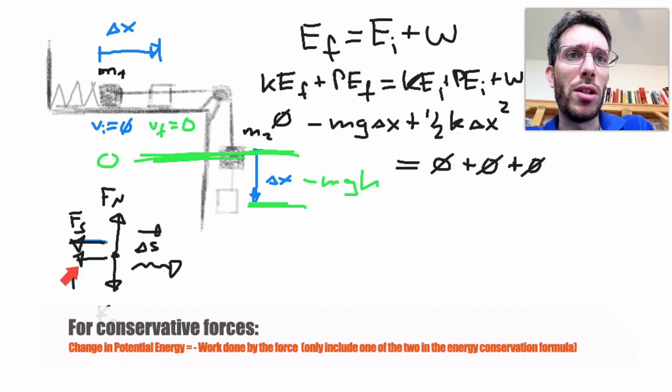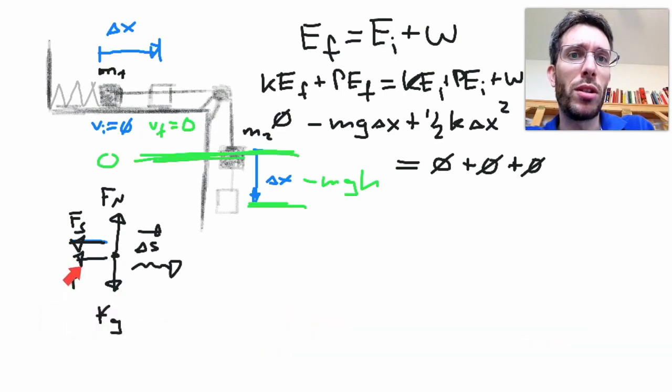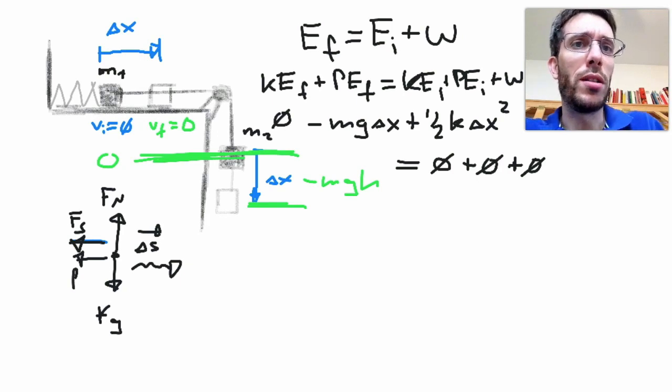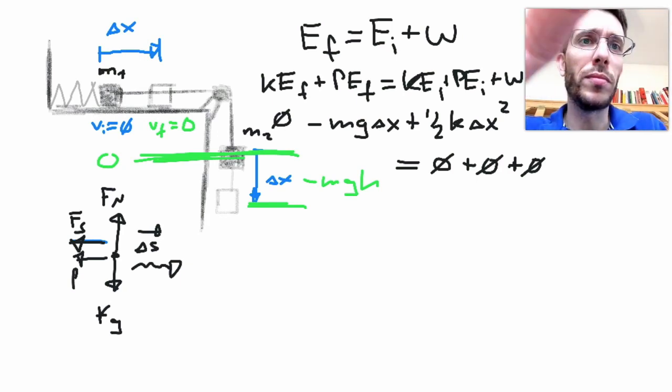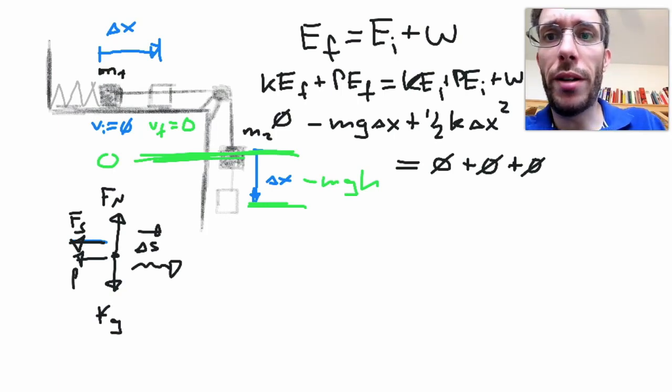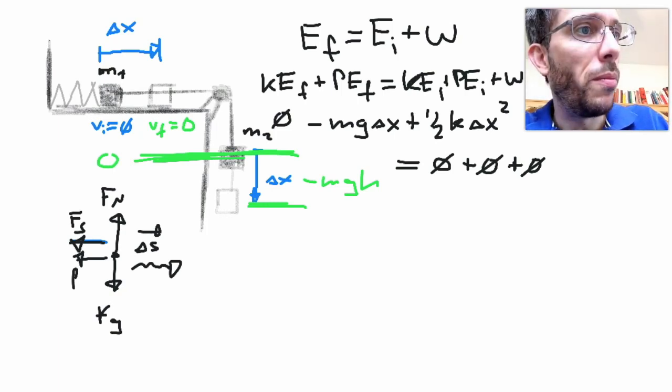So the only work done on M1 is the work done by the friction, as it is in opposite direction. That means we have an angle of 180 degrees. Cosine 180 is minus 1. So therefore, I will have minus the friction times the displacement, which is the delta x.